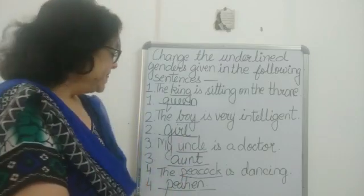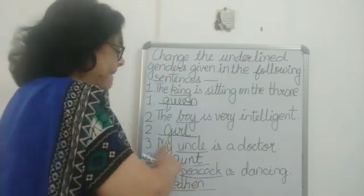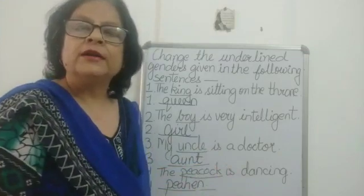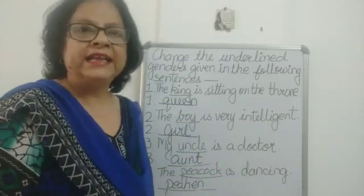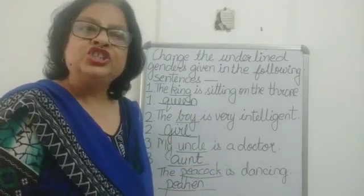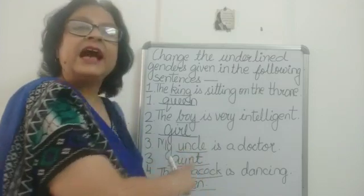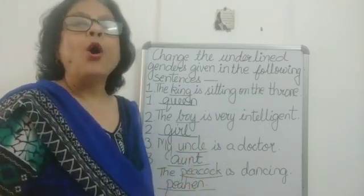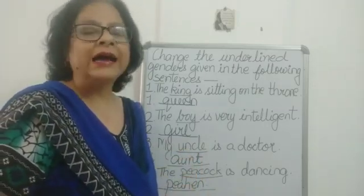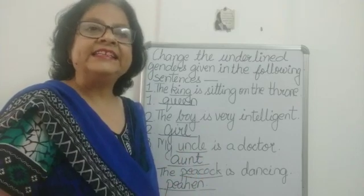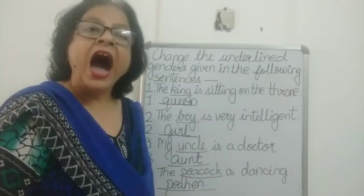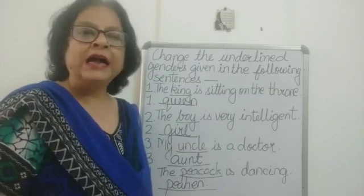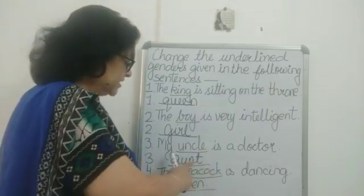The third sentence: My uncle is a doctor. Uncle is underlined, and we have to give the opposite gender of uncle, which is definitely aunt. The opposite gender of uncle is aunt.